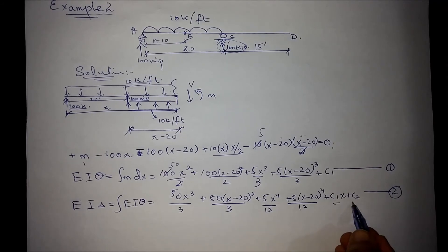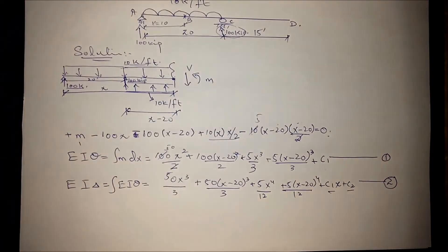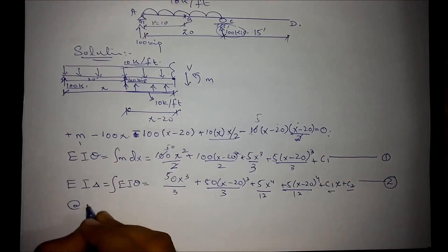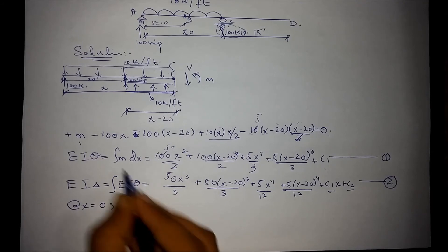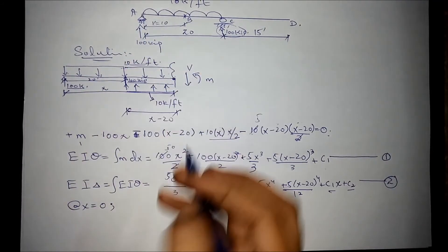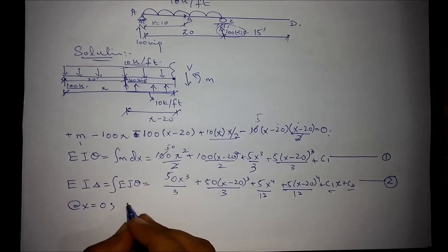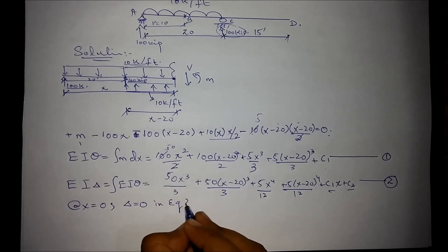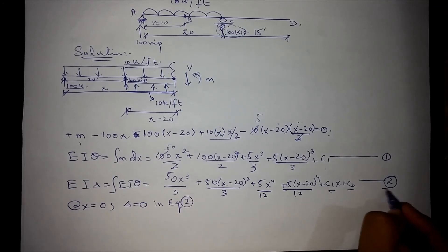Now for c1 and c2 we need to solve these equations simultaneously which requires the boundary conditions. The boundary conditions for the beam would be at x is equal to 0. At x is equal to 0 we know that there is no deflection since there is a hinge support. Delta is equal to 0.